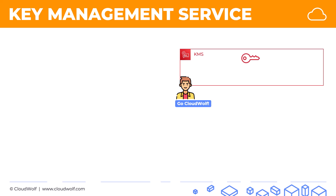Here we've got a cryptographic key that Jack has created. An important thing to note is that KMS is very secure. First of all, the cryptographic key is never stored in plain text form — it is encrypted itself. Moreover, these keys are stored on hardware security modules, or HSMs, which comply with certain security standards. At the time of recording, the standard is FIPS 140-2 security level three.